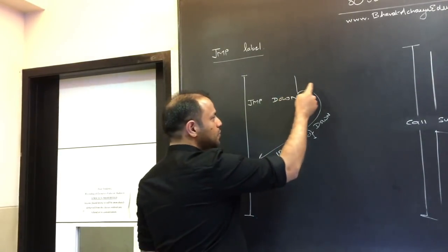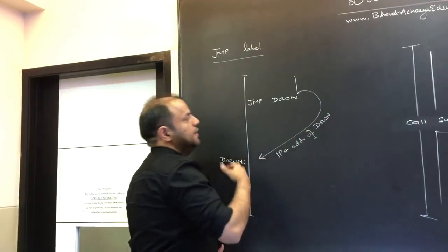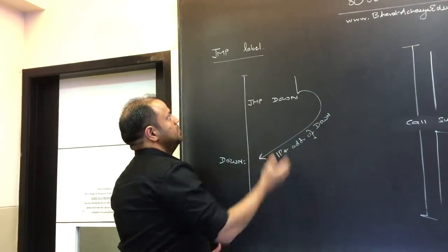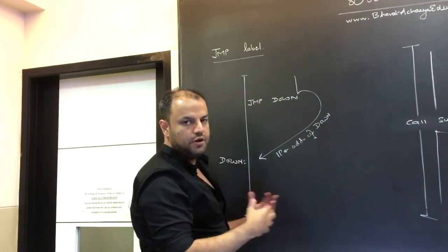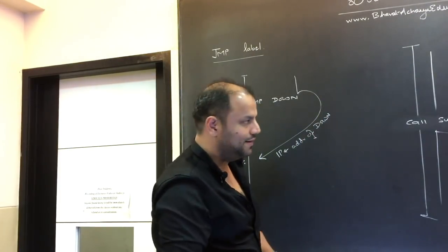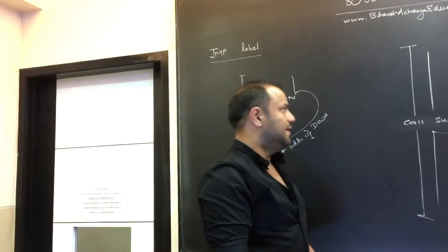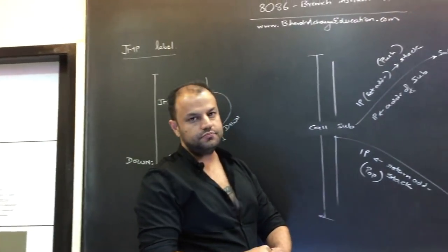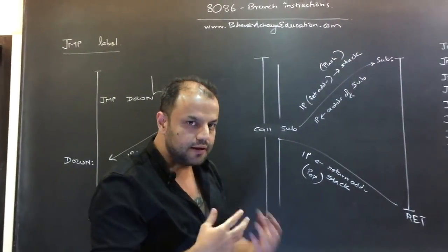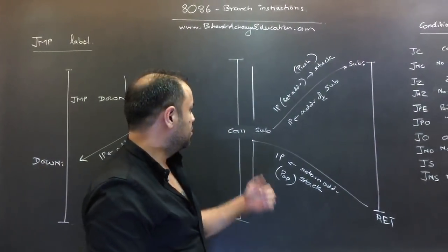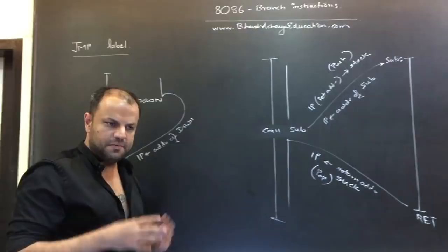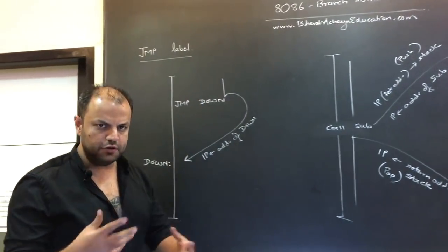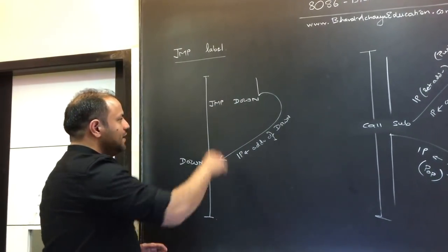So if you want to do a jump, the instruction to be used for that is JMP. I'll be teaching you that in detail. Then there is another kind of branch called the call. I'll give you the basic difference between a jump and a call.